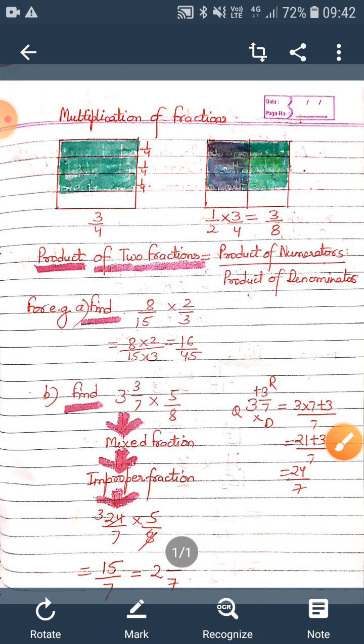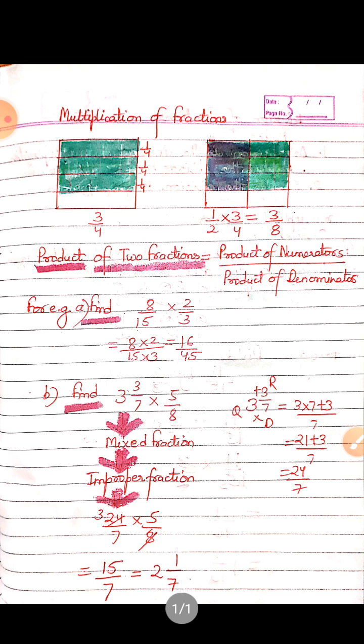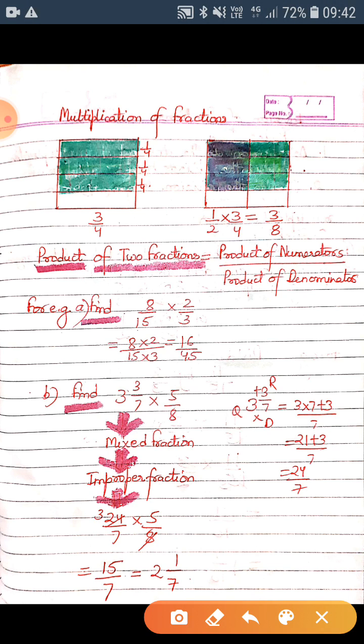As we can see, it has been divided into eight equal parts. So now half of this will be these three parts: one, two, and three. So this fraction will be representing three by eight. We can see that when we have to multiply two fractions, we have to simply multiply the numerators together and the denominators together.